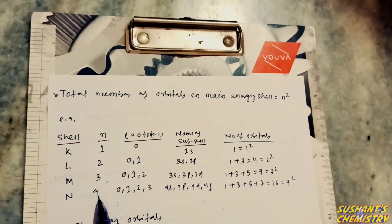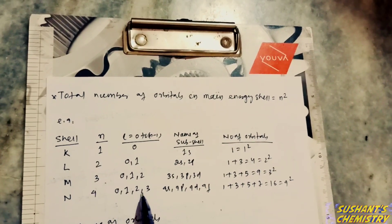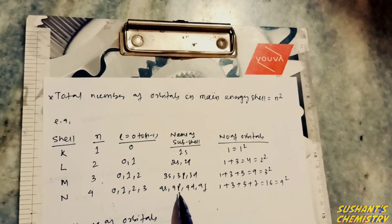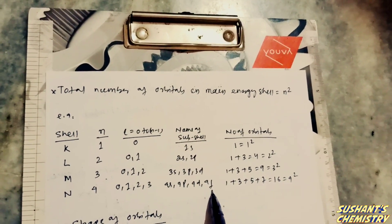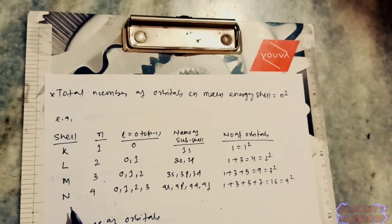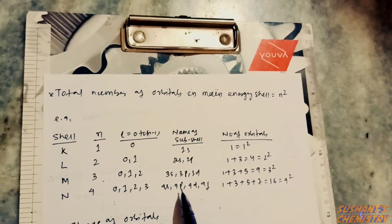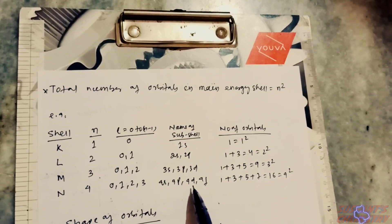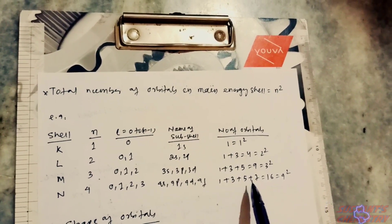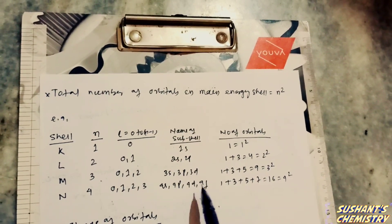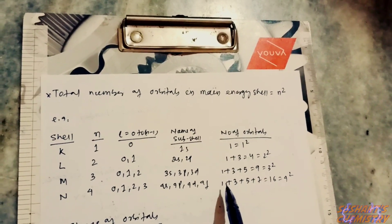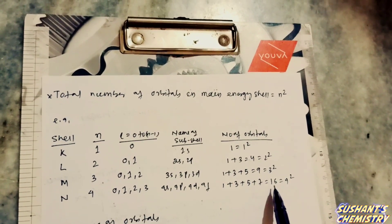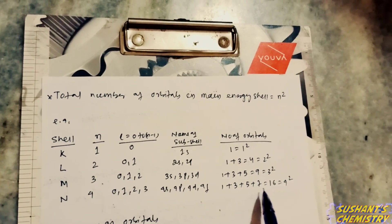For the N shell, n equals four. We get l values of zero, one, two, and three. The N shell contains four subshells: 4s, 4p, 4d, and 4f. The 4s has one orbital, 4p has three orbitals (4px, 4py, 4pz), 4d has five orbitals (4dxy, 4dyz, 4dzx, 4dx²−y², 4dz²), and 4f has seven orbitals.